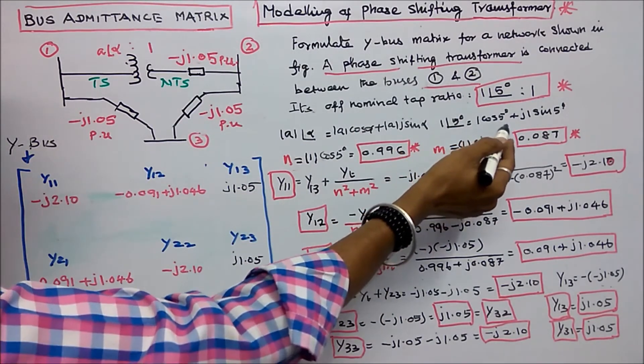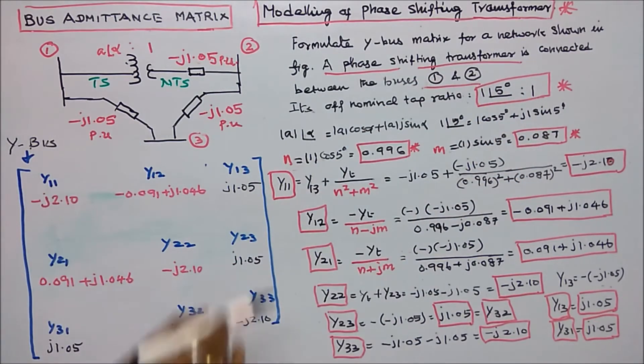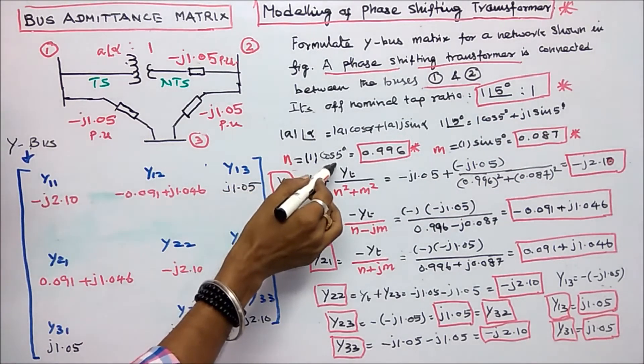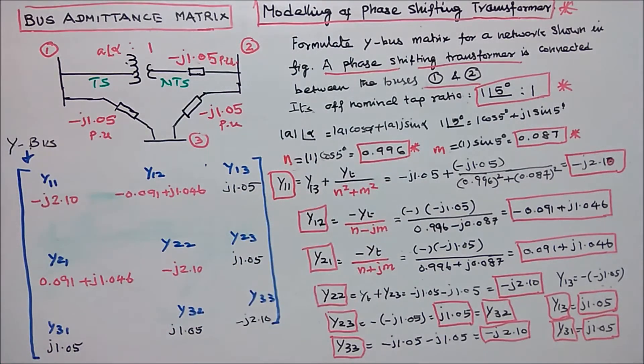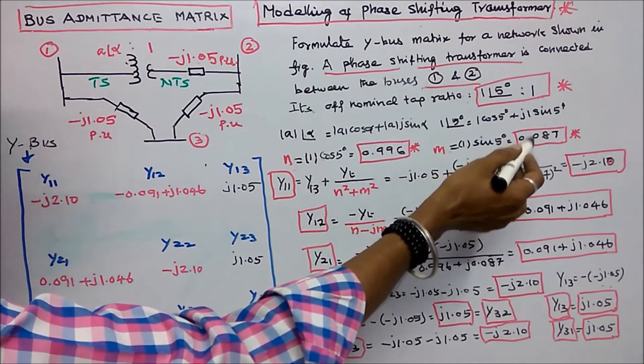Therefore, 1 into cos 5 degrees plus j 1 into sin 5 degrees. I can write n is equal to 1 into cos 5 degrees, that is equal to 0.996. m is equal to 1 into sin 5 degrees, that is equal to 0.087.